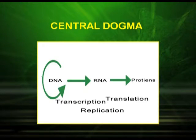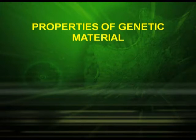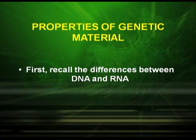We have to go back to the central dogma, which was proposed by Francis Crick. The central dogma says that DNA forms RNA and RNA forms protein. To understand the properties of genetic material, let us first recall the differences between DNA and RNA.